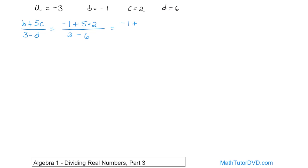Negative 1 plus 5 times 2 is 10. On the bottom, the only thing there is subtraction. So 3 minus 6, you subtract them. 6 minus 3 is 3, but the larger absolute value is the negative sign, so it's going to be negative 3 on the bottom.